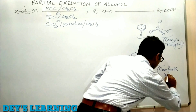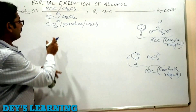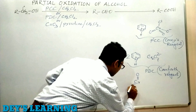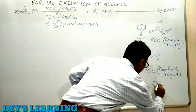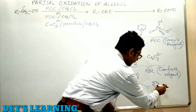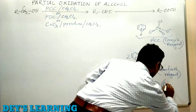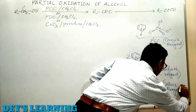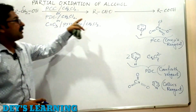The last one is CrO3 with pyridine in CH2Cl2. CrO3 is sp2 hybridized with a planar structure. A mixture of chromium trioxide and pyridine is known as Collins reagent. These three reagents — PCC, PDC, and Collins reagent — are popularly used for the partial oxidation of a primary alcohol to an aldehyde.